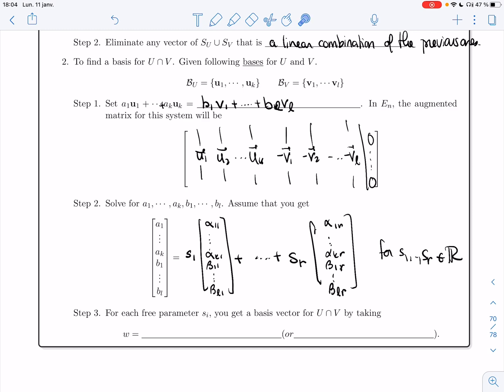Then for each of the parameters here, you're going to get a basis vector for U intersection V by taking these as the coefficients of u1, u2, ..., uk. So you could take α₁,ᵢ*u1 + ... + αₖ,ᵢ*uk.